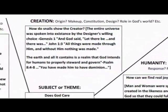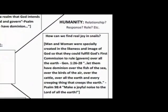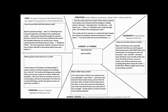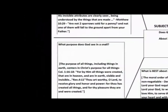The question for the creation box was: How do snails show the creator? Then my next step was to find Bible verses to back that, so I could read the Bible verses to the kids and we talked about each box. Under the humanity box: How can we find real joy in snails? Under the moral order area: What is best about snails? And then in the area of purpose: What purpose does God see in a snail?